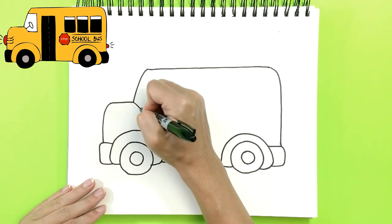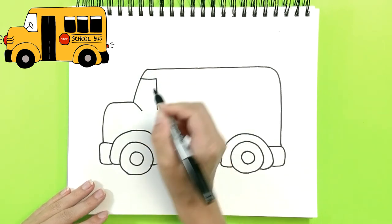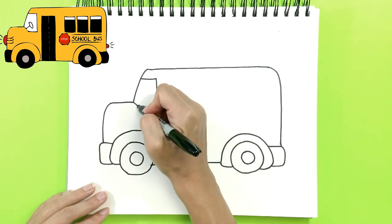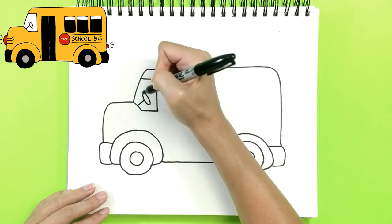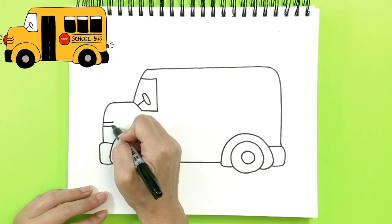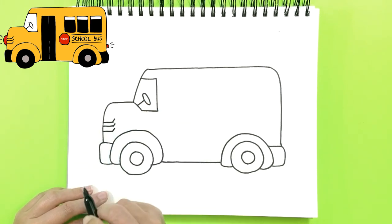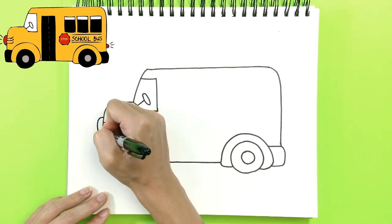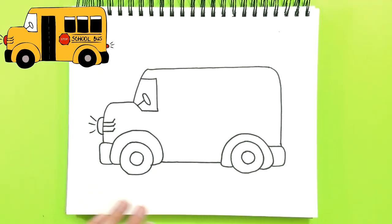Here is the front window. That's where the driver sits, so he can see all the kids. And let's draw a steering wheel. There we go. Let's draw three lines right here. And a light up front. You can see it shines.